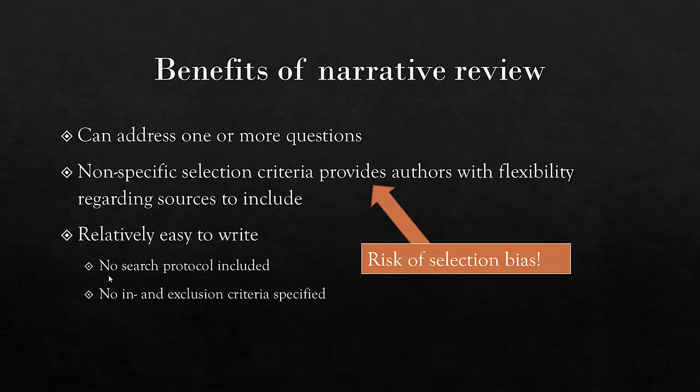The main benefits of a narrative review are summarized here. The first one is that you don't need to aim at one research question. You can actually aim at multiple research questions, and they might even be a bit more loosely defined than for a systematic review, which gives you some room to play. A narrative review might even be an opinion of an expert in the field. The selection criteria are not necessarily always clearly reported, which provides the author with flexibility regarding which articles to include and which to exclude — although be aware that this involves a major risk of selection biases.